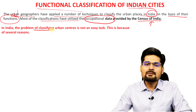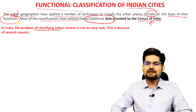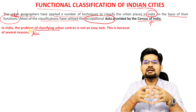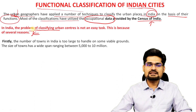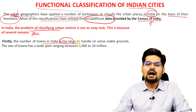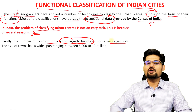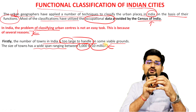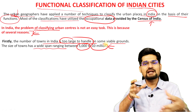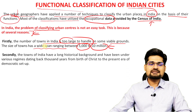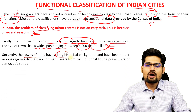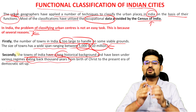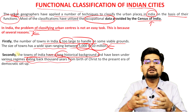In India, the problem of classifying urban centers was not an easy task. There are several reasons why Indian classification is tough. First, the number of towns in India is too large to handle. The size of towns has a wide span ranging from 5,000 to 10 million — a huge range requiring many categories. Second, towns of India have a long historical background under various regimes dating back thousands of years, so their evolutionary and developmental processes are not coherent or similar.